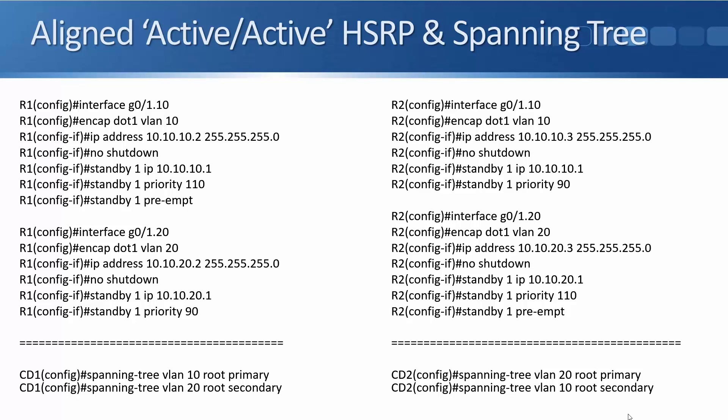For the configuration, R1 is going to be the HSRP active for VLAN 10. I'm using router-on-a-stick sub-interfaces here. On R1, I've got interface GigabitEthernet 0/1.10, encapsulation dot1Q VLAN 10, IP address 10.10.10.2, no shutdown. Then standby 1 IP 10.10.10.1, standby 1 priority 110, and standby 1 preempt. On R2 for VLAN 10, I give it IP address 10.10.10.3, the shared HSRP virtual IP address of 10.10.10.1, and priority 90. So R1 is going to be selected as the active HSRP gateway for VLAN 10.